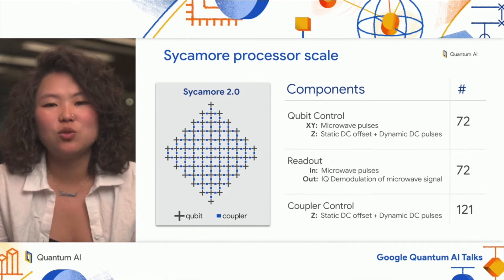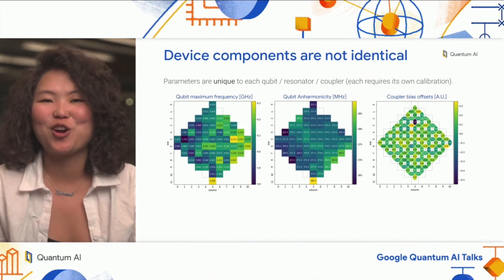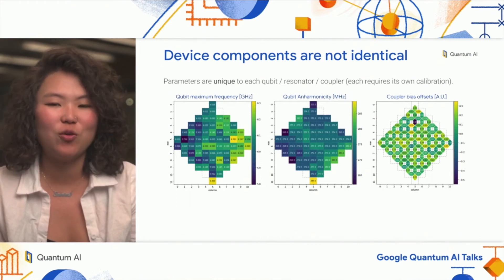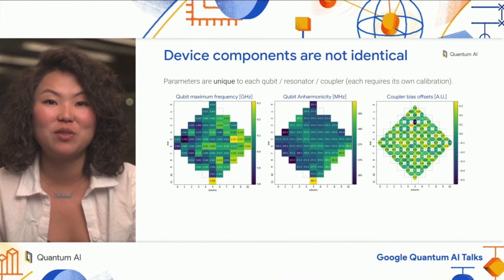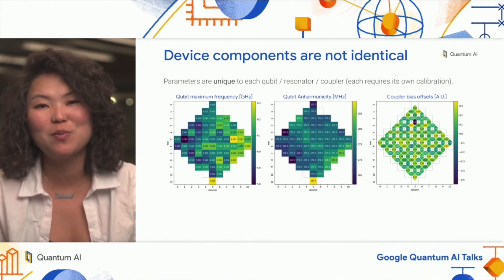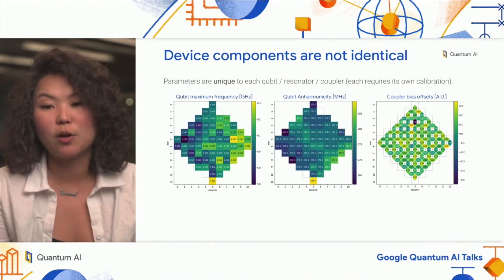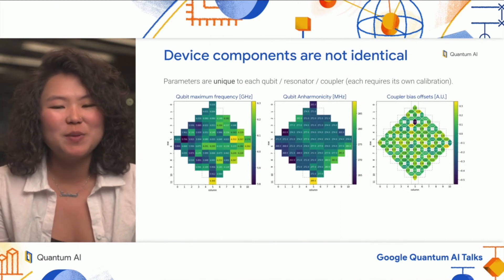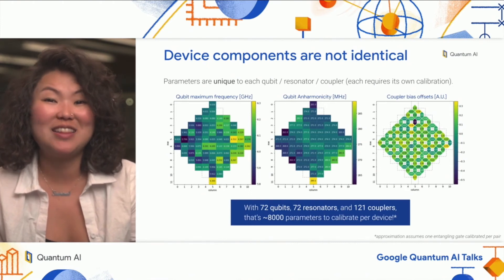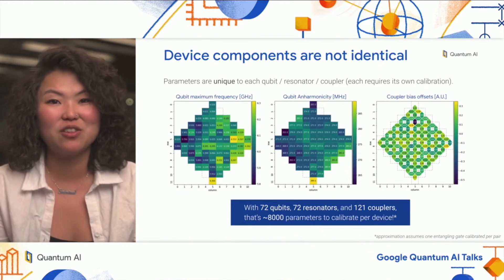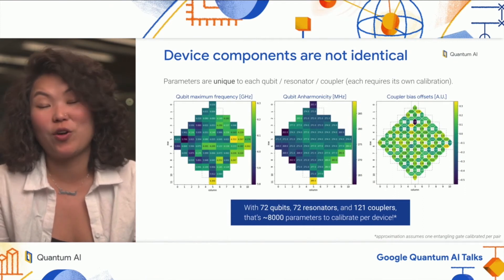A key challenge with these processors is that with variations in both fabrication and design, each qubit, resonator, and coupler is unique, meaning they each need their own independent set of experiments to calibrate control parameters. As an example, we see variations in qubit maximum frequency, anharmonicity, and coupler bias offsets across the Sycamore device used for our surface code experiments. With this many components, we end up with approximately 8,000 individual parameters that need to be calibrated per Sycamore 2 device — a number that will only grow as we continue to scale up.